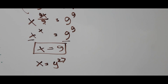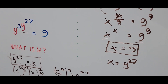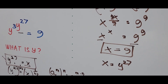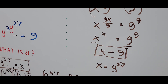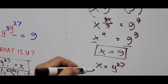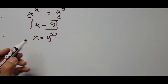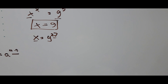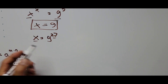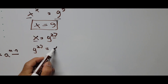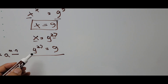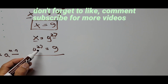That value was formulated earlier: y raised to 27 equals x. We represented the exponent y to the 27 with x to simplify solving. Now that we found x, we need to get the value of y. We substitute x equals 9 back, so y raised to 27 equals 9.